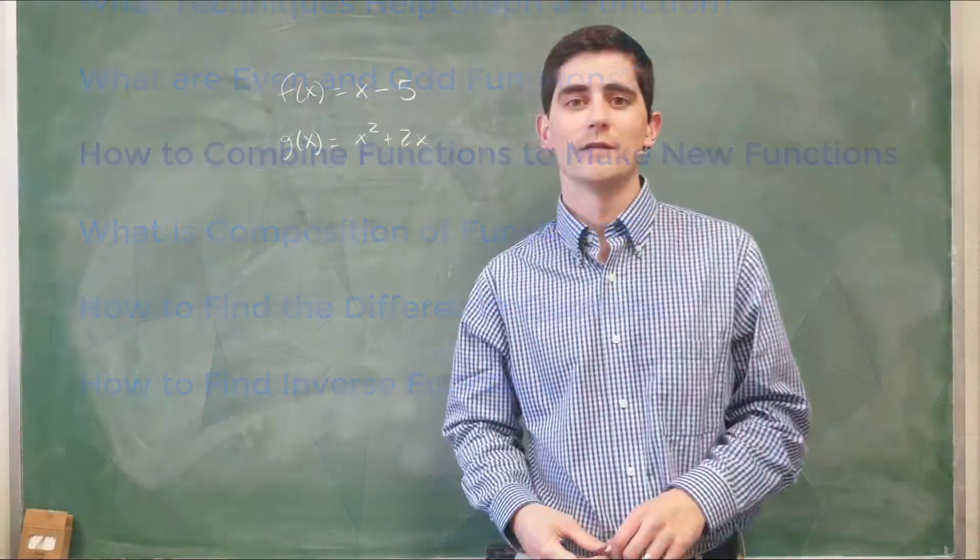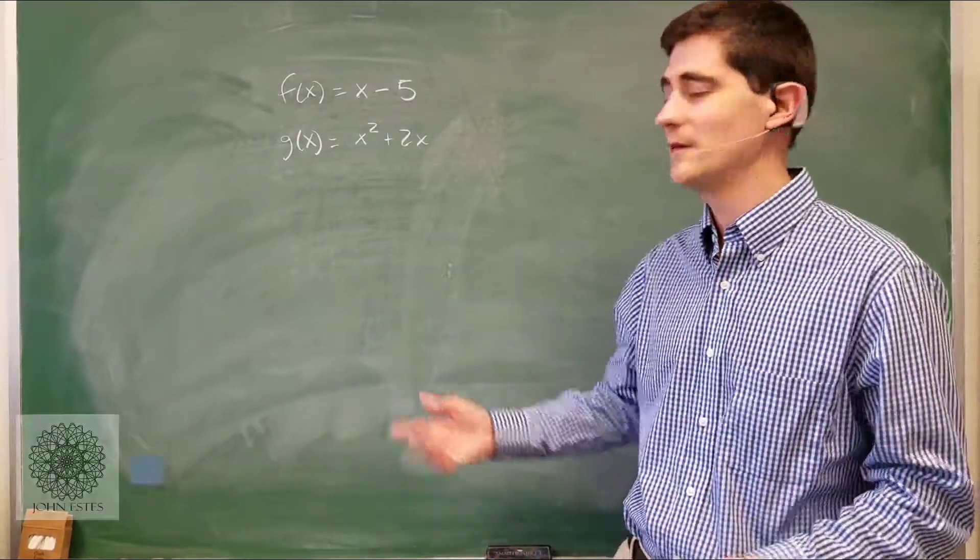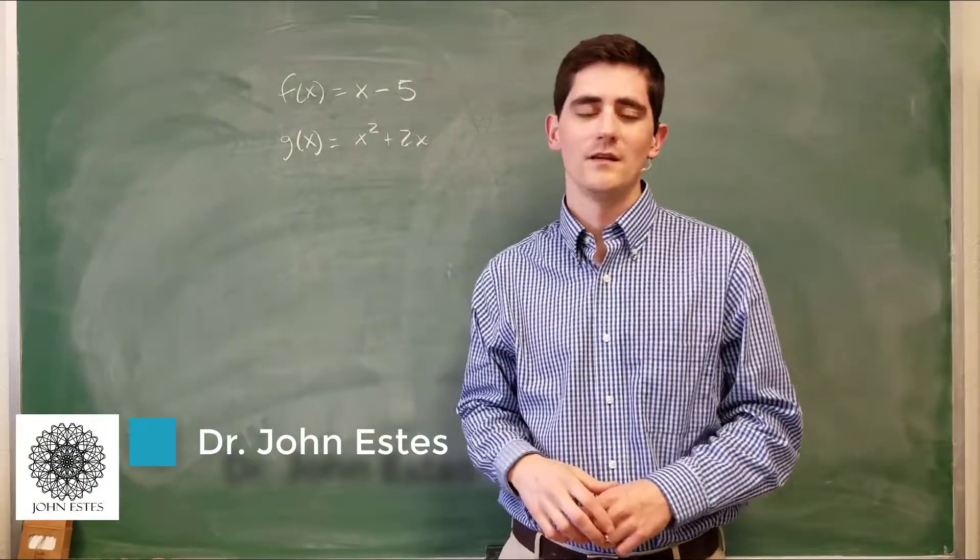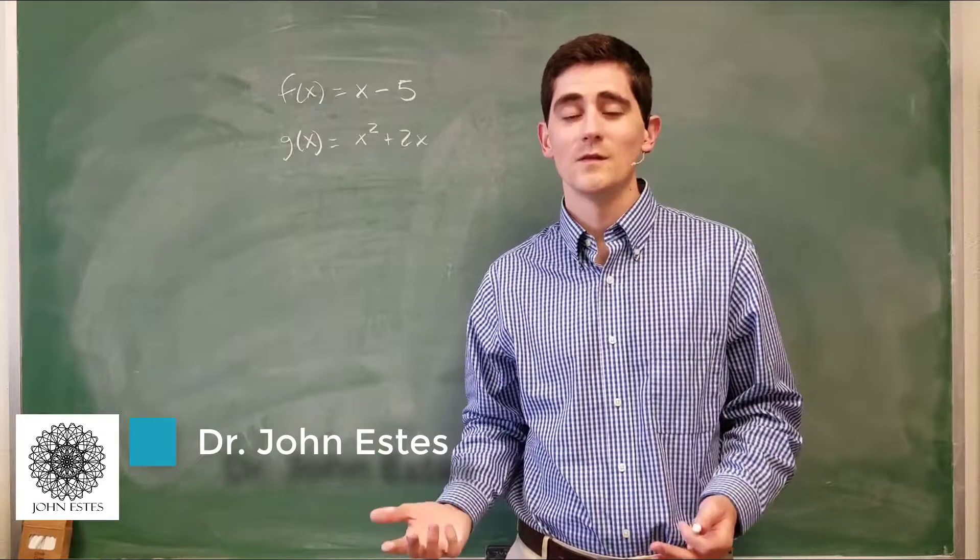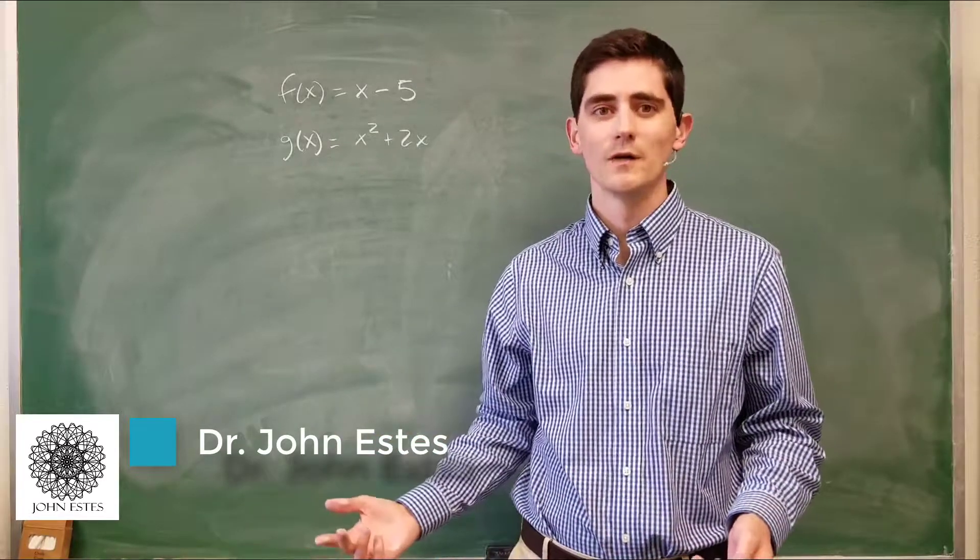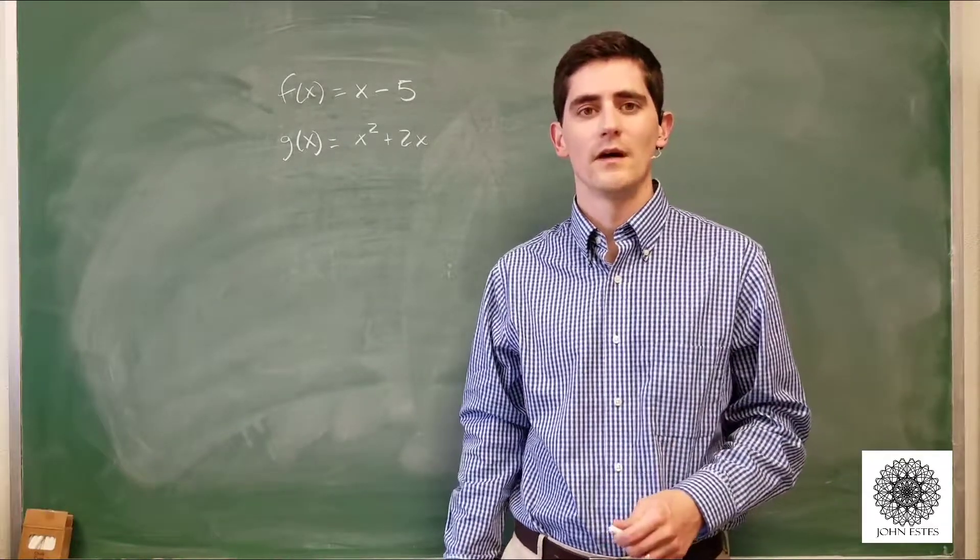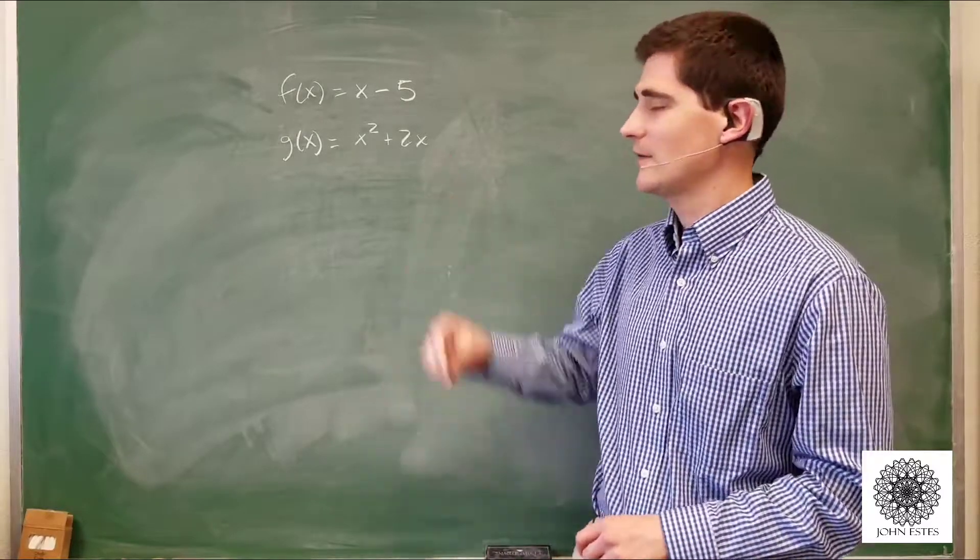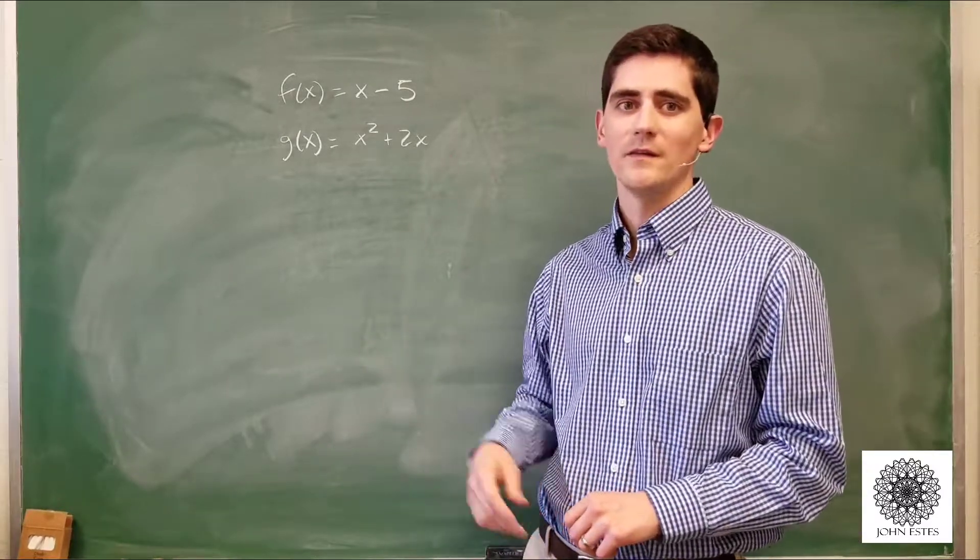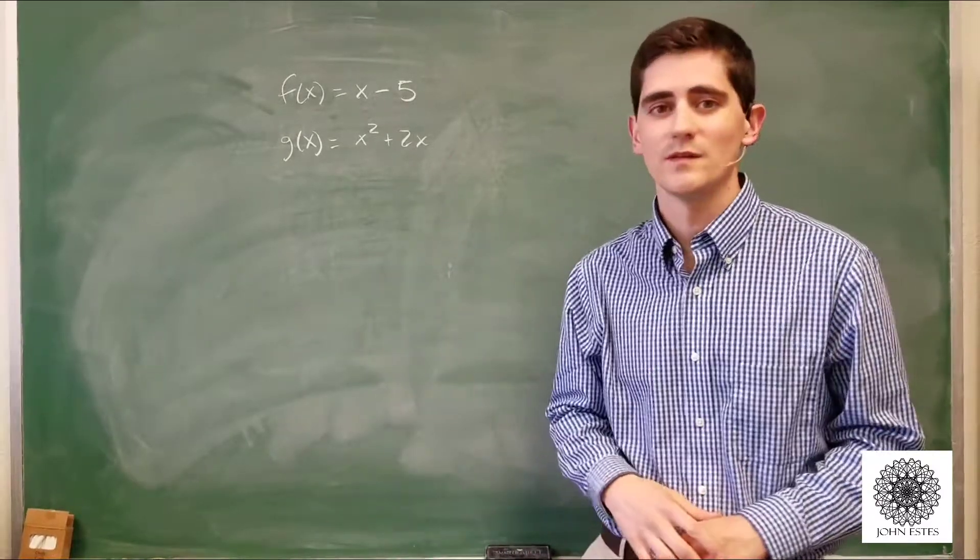An interesting thing in algebra is that if you have two functions like I have here, f of x and g of x, I can use these functions to build all sorts of new functions. So I'm going to show you how to do that. For example, here, if I have f of x equals x minus 5 and g of x is x squared plus 2x.